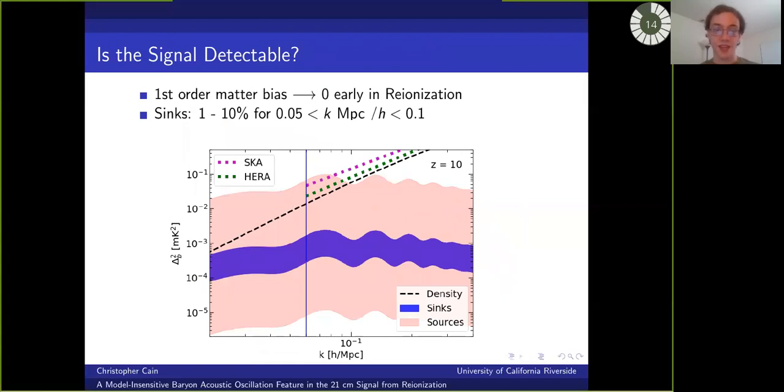So is the signal detectable? Well, the answer for the majority of reionization is probably not. It turns out that for the sink bias factors that we estimate here, the contribution to the signal is one to two orders of magnitude below the percent level. And so quite small. However, there is one era at which a detection is much more likely. Early in reionization, when the universe is about 10 to 15 percent ionized,